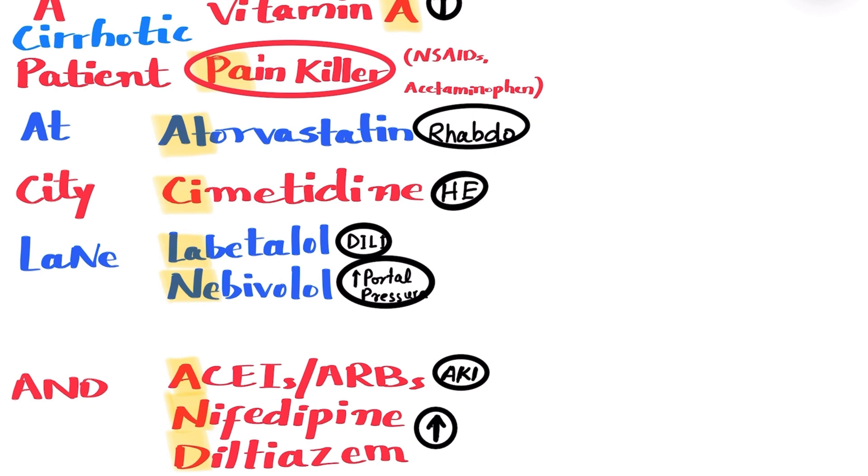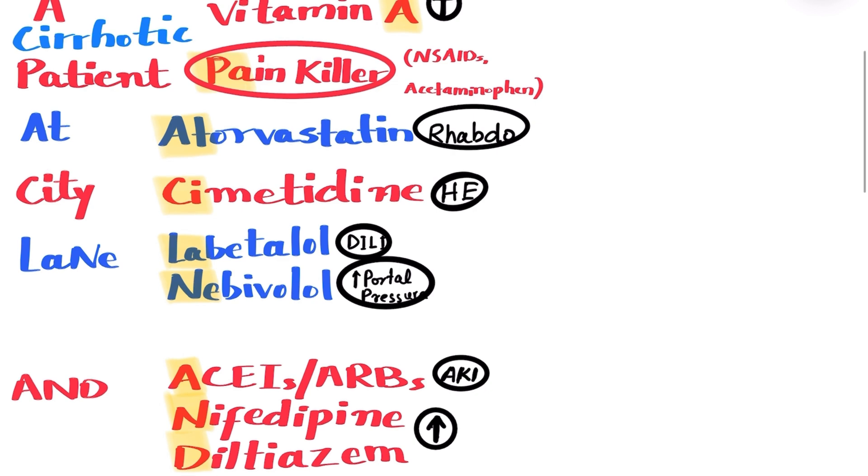From patients, we can remember painkillers that include NSAIDs and acetaminophen. As far as NSAIDs are concerned, they should be avoided in liver failure patients because they increase the risk of bleeding, acute kidney injury, and fluid retention.